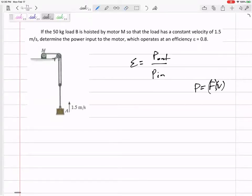50 kilogram load B is hoisted by motor M so that the load has a constant velocity of 1.5 meters per second. Determine the power input to the motor, which operates at an efficiency of 0.8.